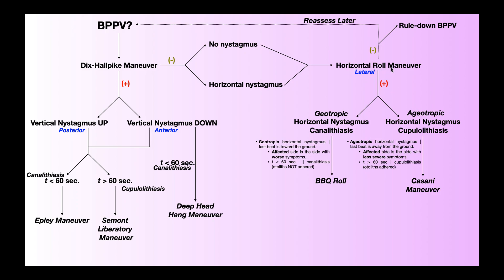In contrast, if the horizontal roll maneuver reproduces ageotropic horizontal nystagmus, then the patient likely has a lateral or horizontal cupulolithiasis. In that case, we would expect the nystagmus to last longer than 60 seconds, indicating the otoliths are adhered to the walls of the canal or ampulla. The affected side is the side with less severe symptoms — if the patient reported the left side was worse, the right (less severe) side would be the affected side, and the treatment of choice would be the Cassani maneuver.